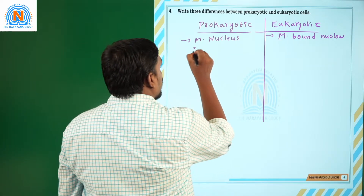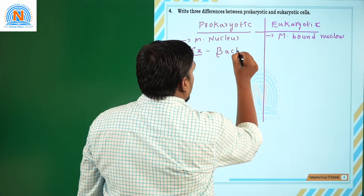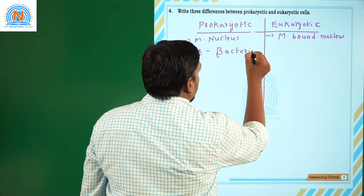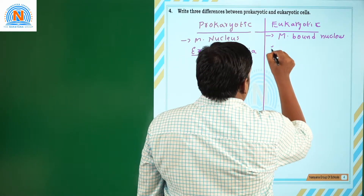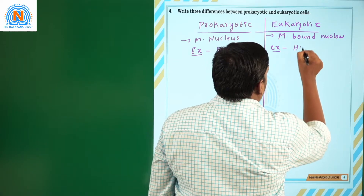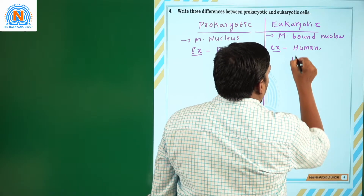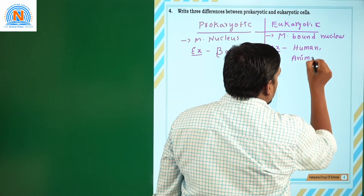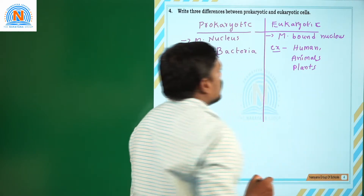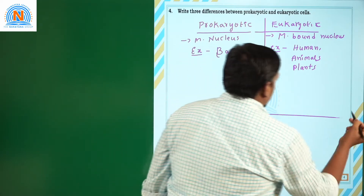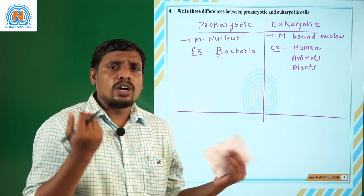The best example of a prokaryotic organism is bacteria. The best example of eukaryotic organisms includes the human body, all kinds of animals, terrestrial animals, and even plants. These are the basic and general differences we have to keep in mind.